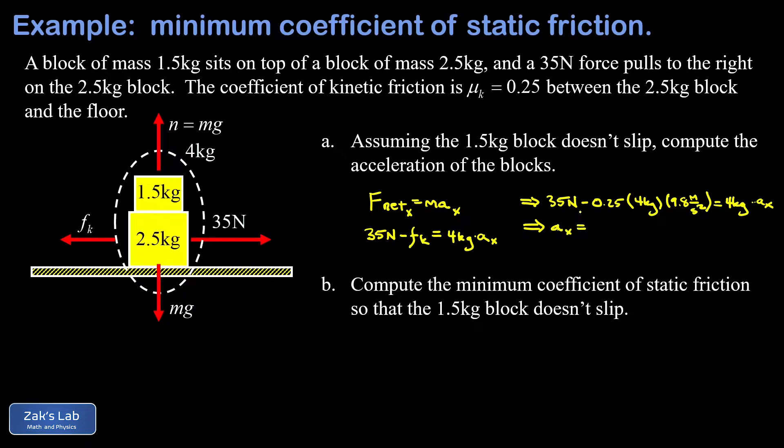We can do this all at once in our calculator. We take 35 minus 0.25 times 4 times 9.8 and then we divide it by 4. When we run the numbers on this we get 6.3 meters per second squared.